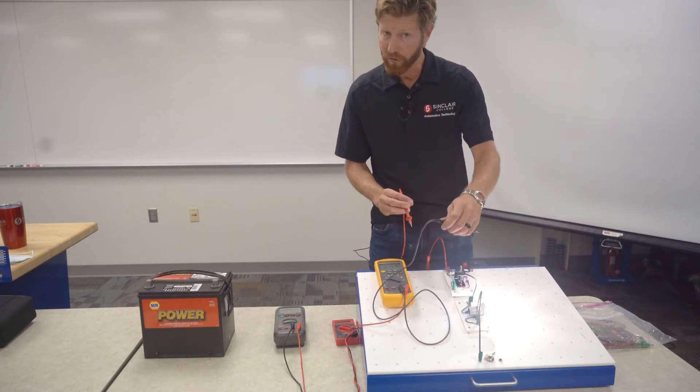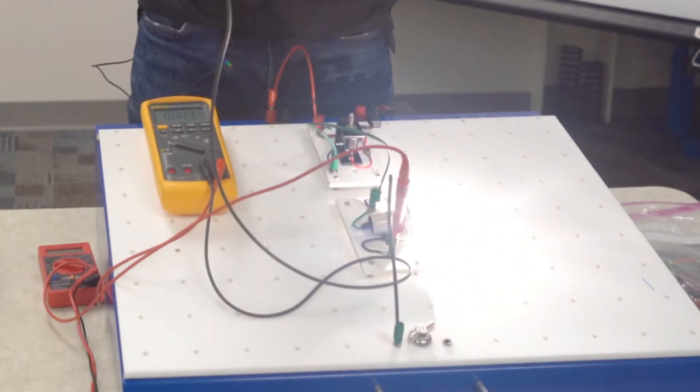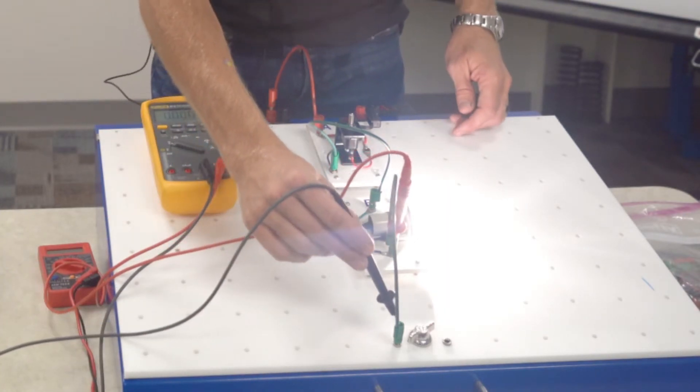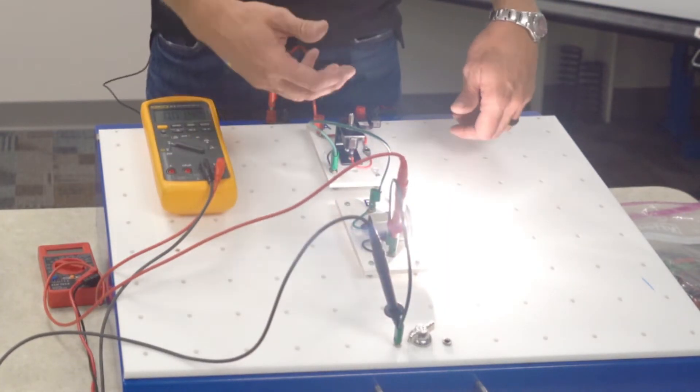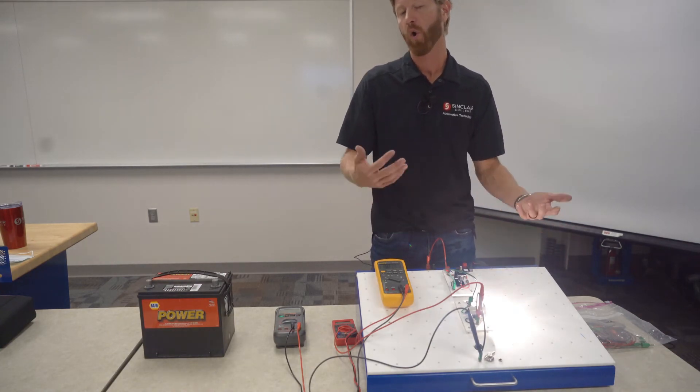Now if I want to do the ground side, same thing. I take my red lead and put it after the component and my black lead goes all the way to wherever this component is grounded. So this represents the ground. Again, you could go all the way back to the battery or the frame or the body, wherever the circuit is grounded or a good ground.